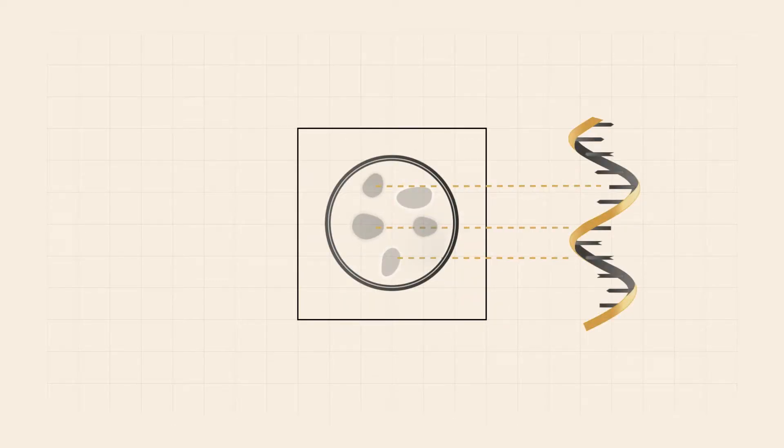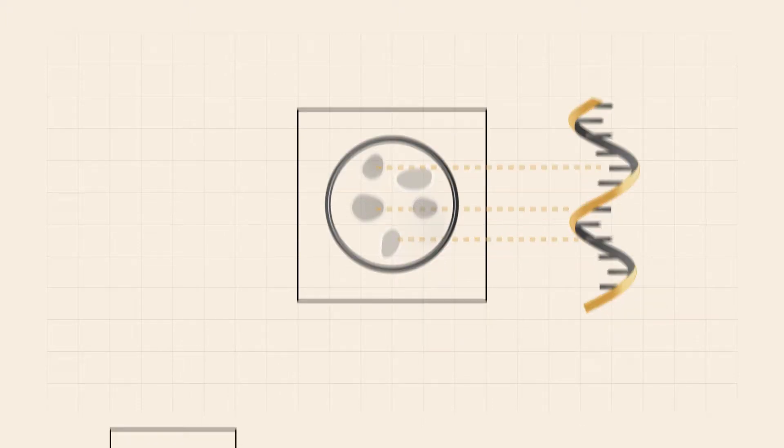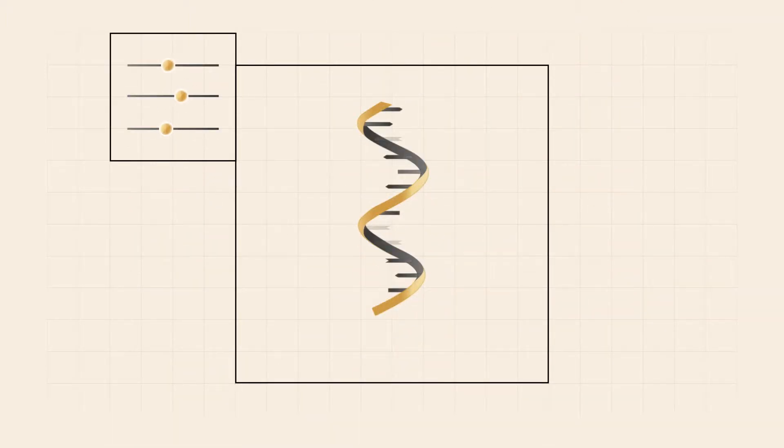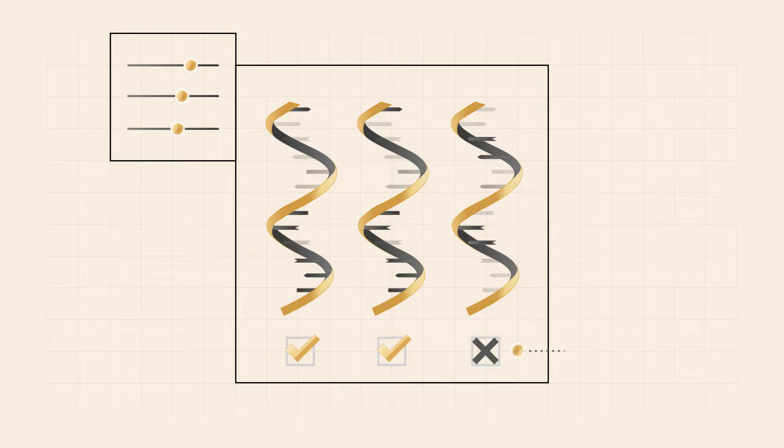Previous high throughput sequencing methods have been able to analyze which genes are active in which cells. However, until now, the methods used to identify the regulatory mechanisms that lead to gene expression and to find out how stable these transcripts are have been insufficient or have required enormous technical effort.